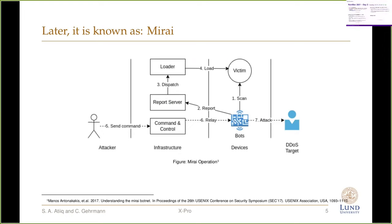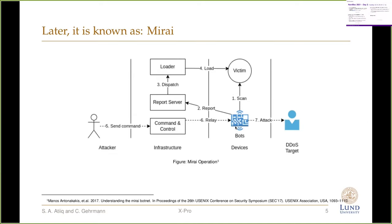Mirai performs all of these attacks by first scanning IP ranges from the internet. If it finds devices that still run default username and password, it will make a report to the report server. The report server then dispatches a specific malware for that specific device, and the loader sends the malware to the victim. Once the malware is installed, they become bots, controlled by a Command and Control server — at which point the attacker can send an attack message anytime they want, at their discretion.